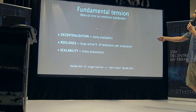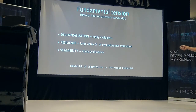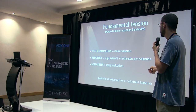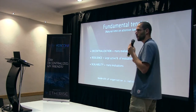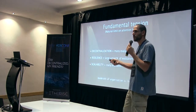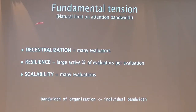This is the biggest conundrum of decentralized decision-making: a fundamental tension between decentralization, resilience, and scalability. This also holds true for the blockchain itself — the blockchain is a decentralized decision-making process for a very narrow purpose, but it has a strong tension between decentralization, resilience, and scalability.